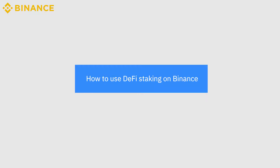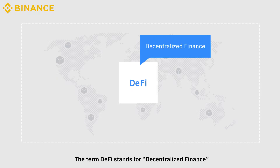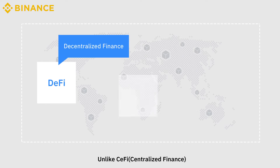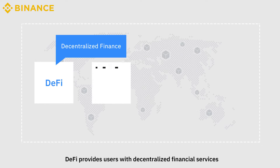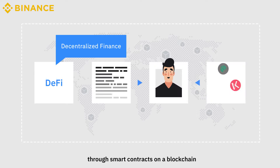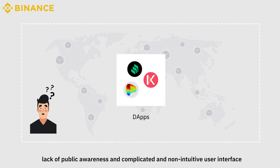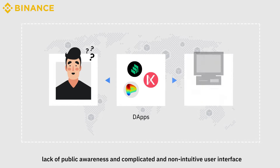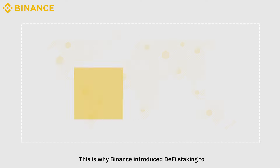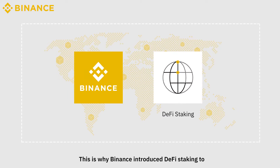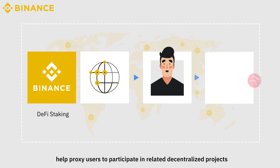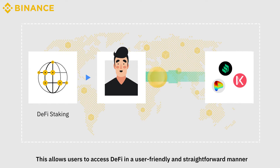DeFi Staking: How to use DeFi staking on Binance? The term DeFi stands for Decentralized Finance. Unlike CeFi, Centralized Finance, DeFi provides users with decentralized financial services through smart contracts on a blockchain. Currently, DeFi projects have not been fully adopted for two main reasons: lack of public awareness and a complicated, non-intuitive user interface. This is why Binance introduced DeFi staking to help proxy users participate in related decentralized projects, allowing users to access DeFi in a user-friendly and straightforward manner.